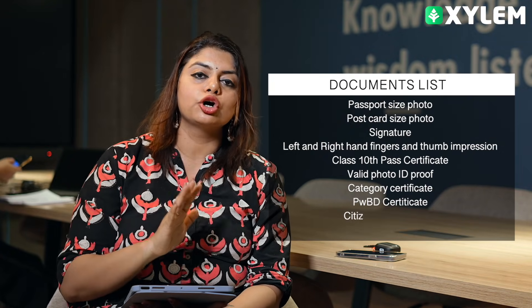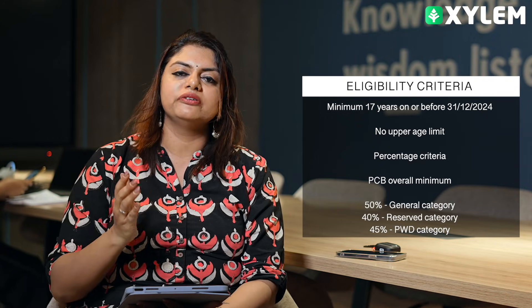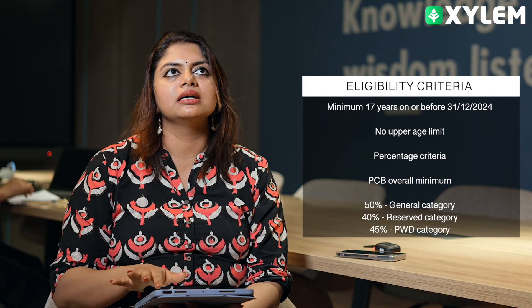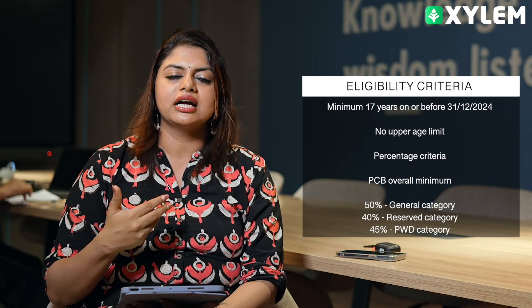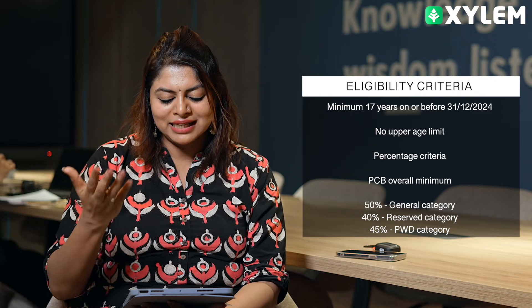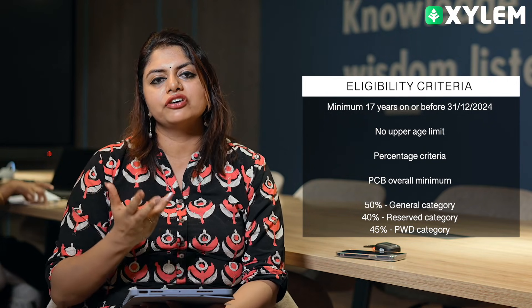The upper age limit is 31st December 2024. For Physics, Chemistry, Biology — minimum 50% aggregate score is required. For reservation: 40% for PWD category, 45% for other reserved categories. You have to check your eligibility before applying.